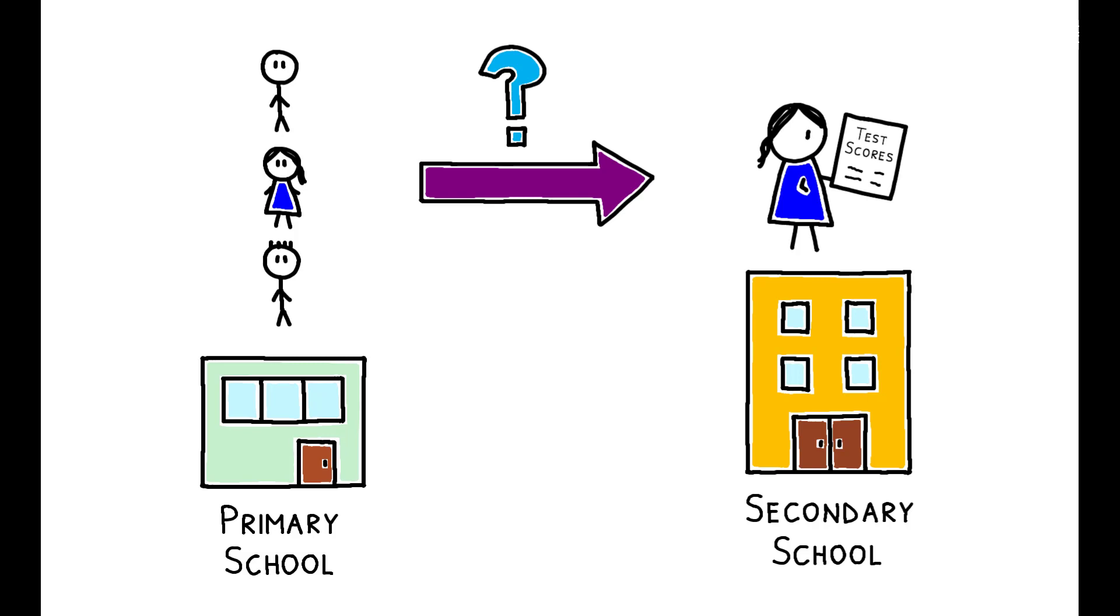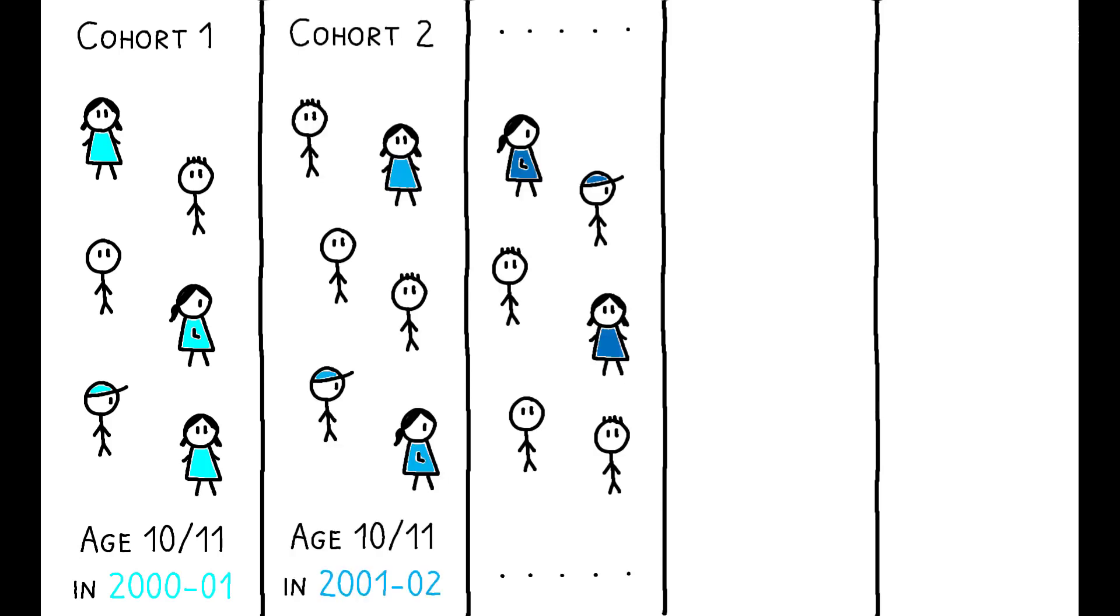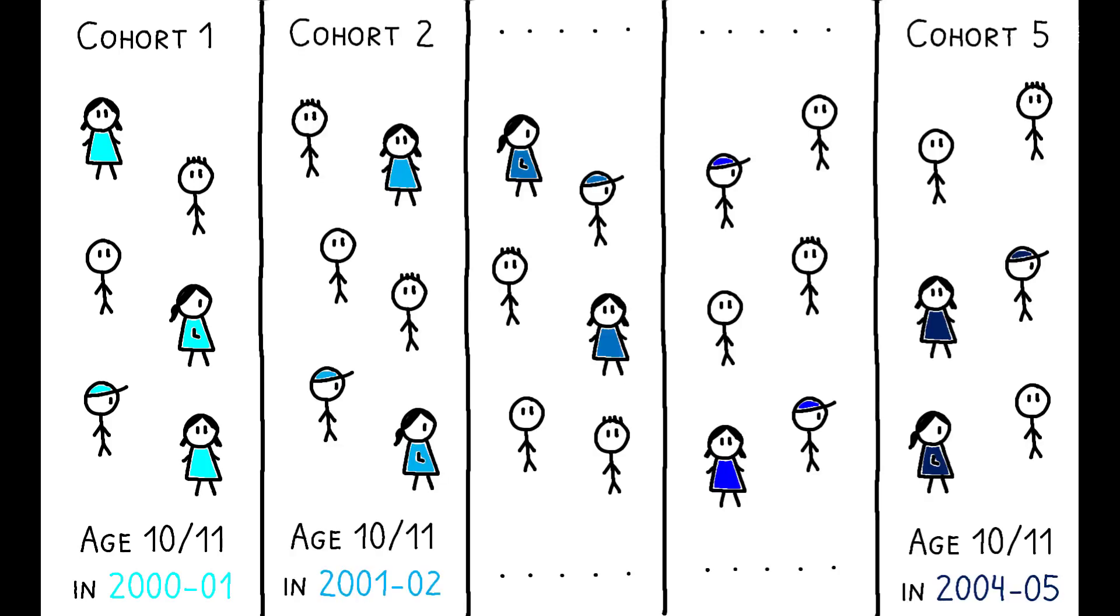Several aspects of this setting are worth highlighting. First, the data are comprehensive, encompassing five cohorts of the entire English state school population. This amounts to almost 2.3 million students attending 14,500 different primary schools.